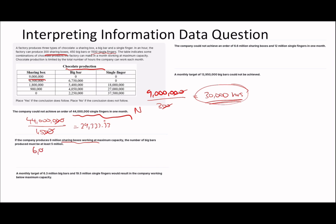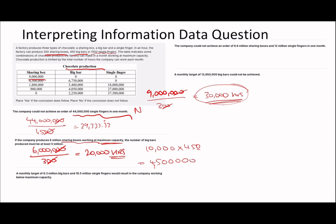Sub-question 2: if the company produces 6 million sharing boxes, that's 6,000,000 divided by 300 = 20,000 hours. Working at max capacity leaves 10,000 hours. If those remaining hours go entirely into big bars (10,000 times 450), you get 4,500,000 big bars. So the statement that big bars must be at least 5 million is wrong.